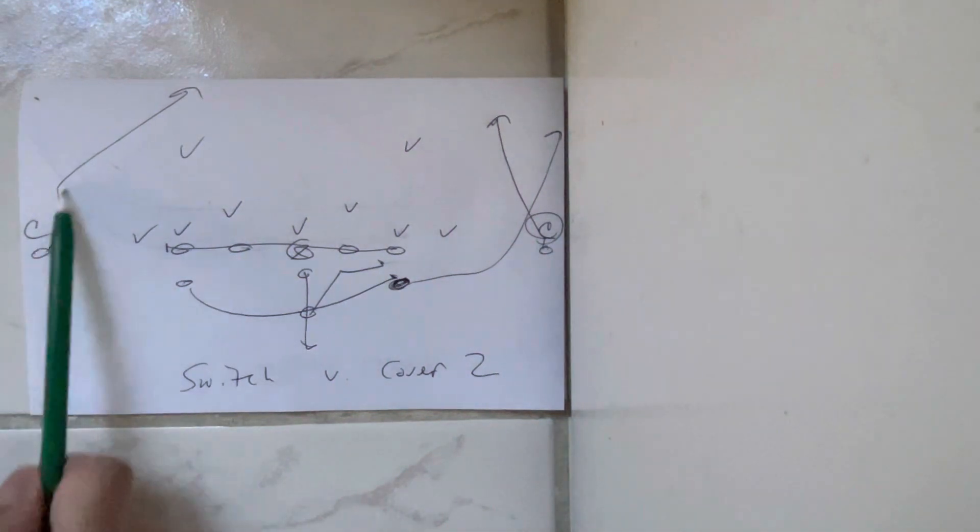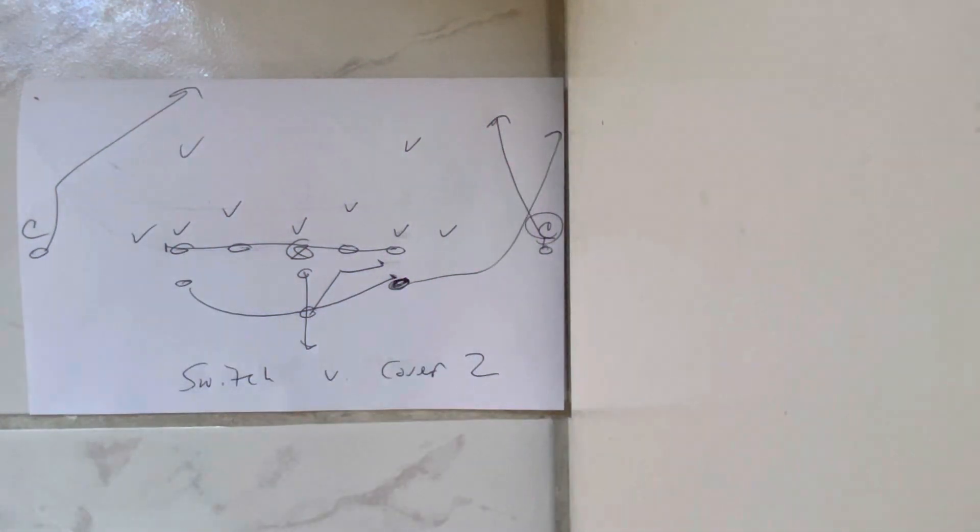The backside receiver's going to run seven yards in post. Quarterback's going to throw it to the A-back up the numbers, and you're going to get yourself a scorer.